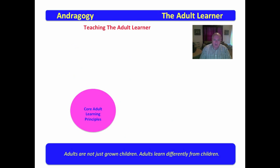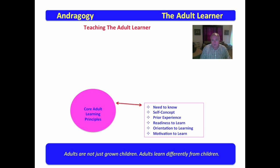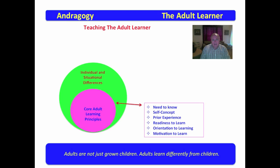Teaching the adult learner — I want to go back over the core adult learning principles. These are the things we just covered. Adults have a need to know, self-concept, prior experience, readiness to learn, and orientation to learning — which refers to the context of the learning, why the learning is important. Adults are then able to motivate themselves to learn if they deem it to be important.